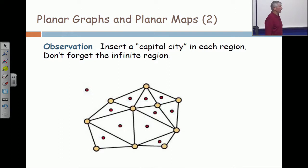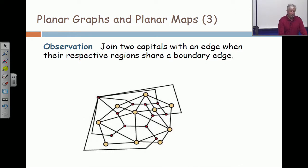Now connect up these capital cities with edges when their countries share a boundary edge. Now in my drawing I've used some crooked edges, and I did this just for visual clarity. Is it clear what those edges are representing?